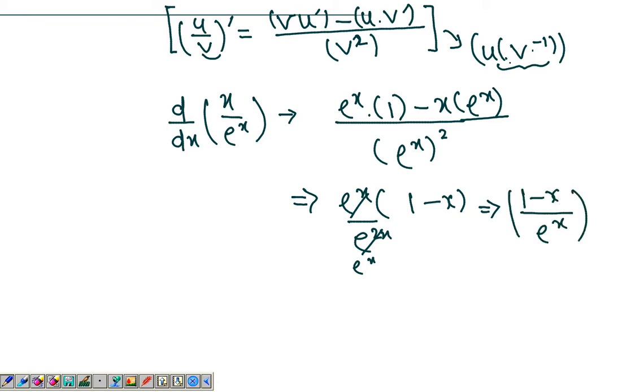What if I did it this way? What if I just rewrite this as x times e to the negative x and then differentiate it with respect to x? I apply the product rule now.